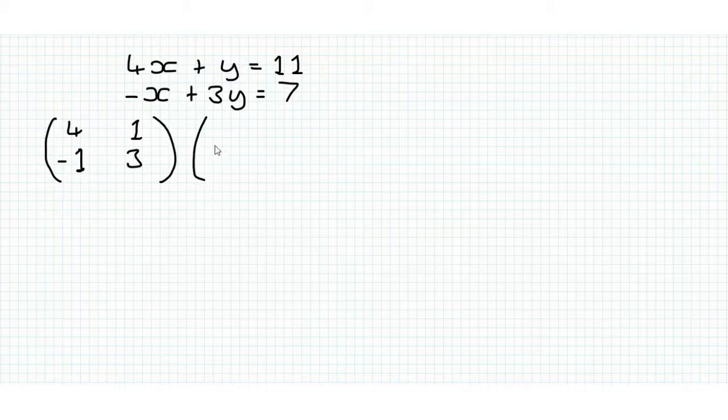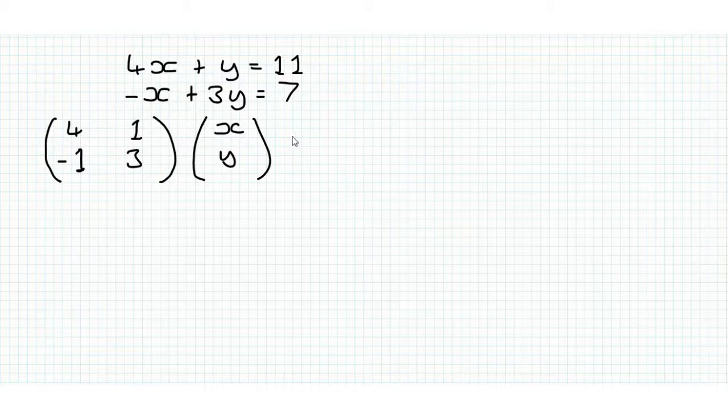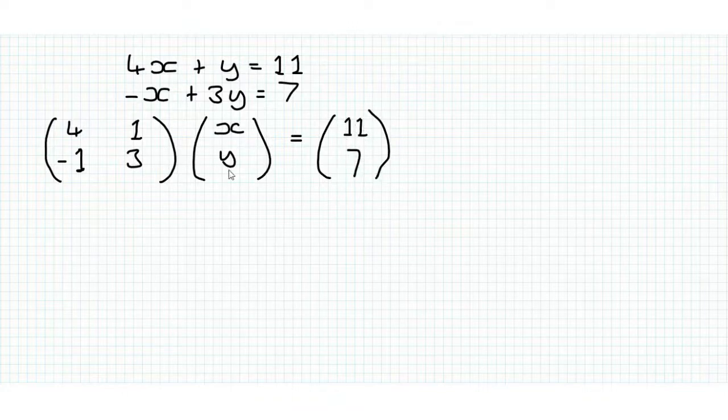We multiply this by x and y, and this is equal to 11, 7. And when we do the matrix multiplication this comes out true because by this matrix we go across this first row. 4x plus 1y and that's equal to 11 and then we get minus x plus 3y and that will be equal to 7.